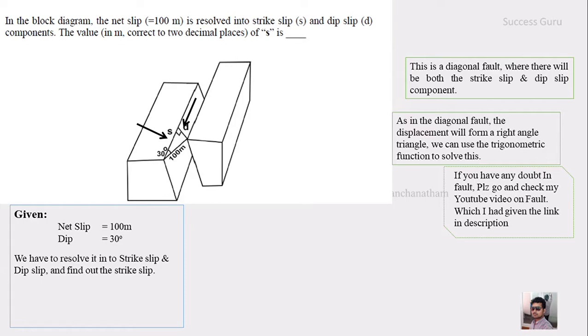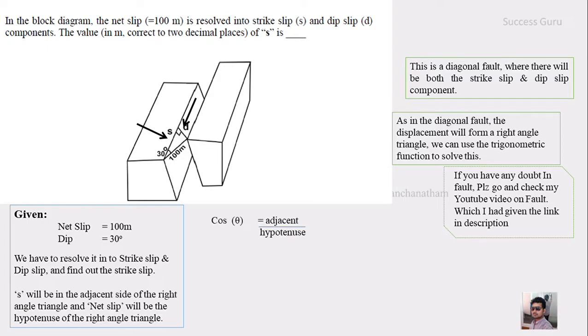And you know the relation between the strike and the dip is 90 degree. So that will form a right angle triangle. So we can keep this S side as adjacent side and the net slip as hypotenuse. And we know cos theta is equal to adjacent by hypotenuse. Therefore cos 30 will be equal to S by 100 meter. And we know cos 30 is root 3 by 2. So therefore S will be equal to 173.21 by 2. So S will be 86.6, that is the strike slip is equal to 86.6 meter.